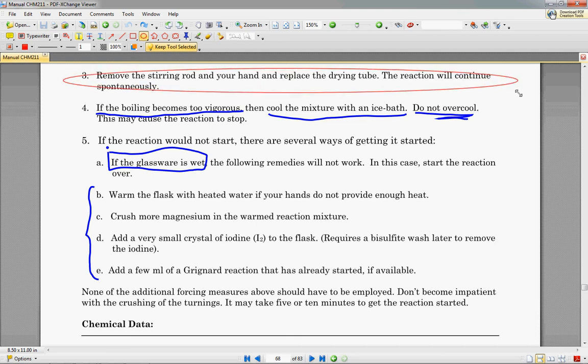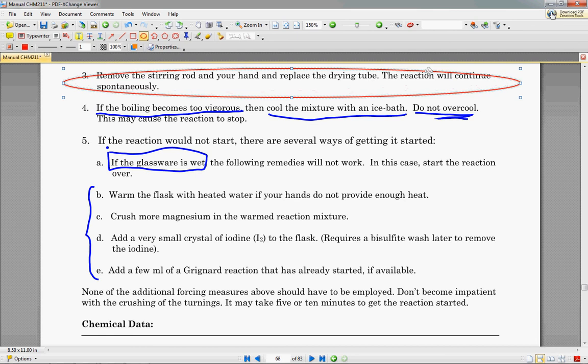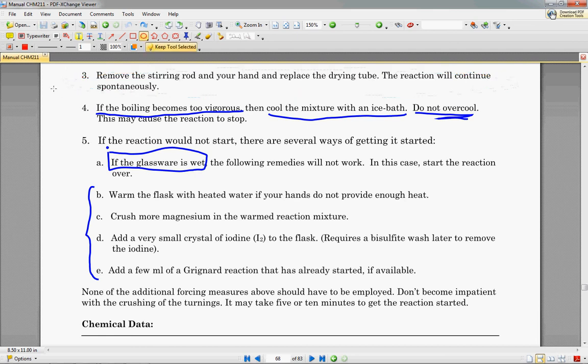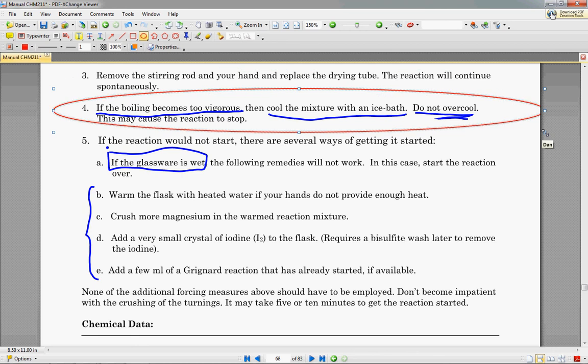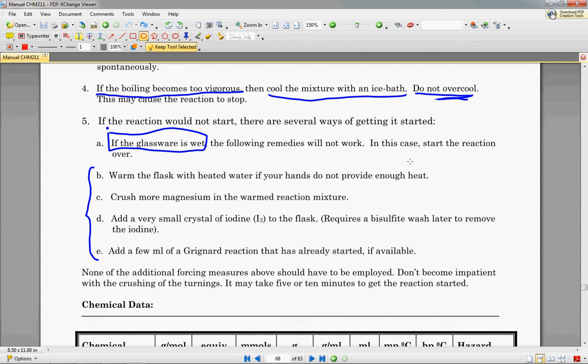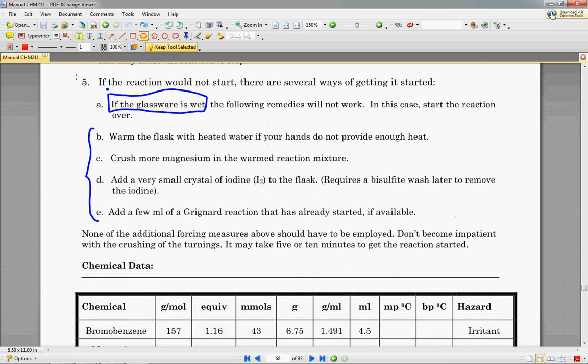Remove the stirring rod once that occurs, and your hand, and replace the drying tube. The reaction will continue spontaneously. If the boiling becomes too intense, too vigorous, then you're going to need to cool the mixture with an ice bath, but don't over-cool it, as this will stop the reaction. Like I said, this is a pretty difficult experiment. You have to really be careful about balancing heat, and cool, and a bunch of other stuff.